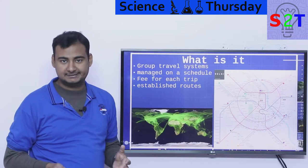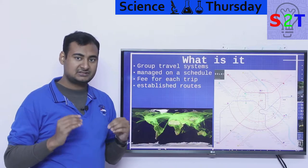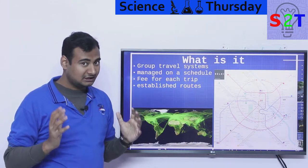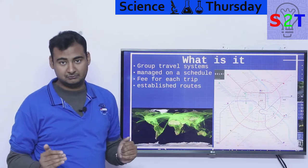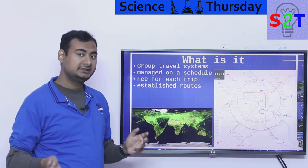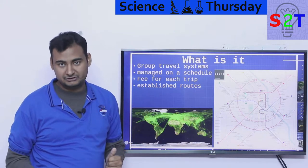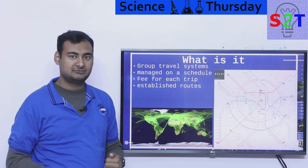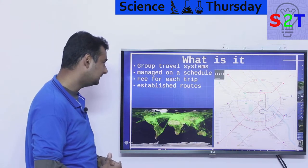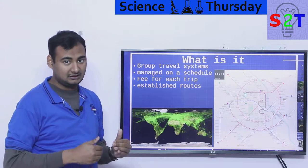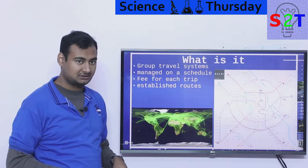What is this transport system? It's basically a group travel system — not meant for one person going from person A to person B, but for large groups of people, minimum 50 or 60. It has a schedule, so it does not run when you want; it runs on its own schedule. There is a fee per trip, so you don't have any capital investment. You simply go, use it, and pay the fee.